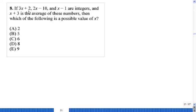If 3x plus 2, 2x minus 10, and x minus 1 are integers, and x plus 3 is the average of these numbers, then which of the following is the possible value of x? 2, 5, 6, 8, 9.